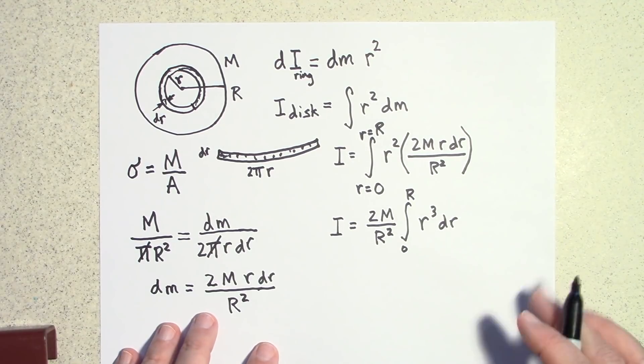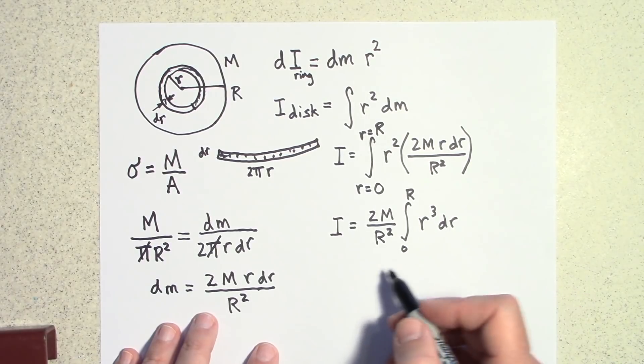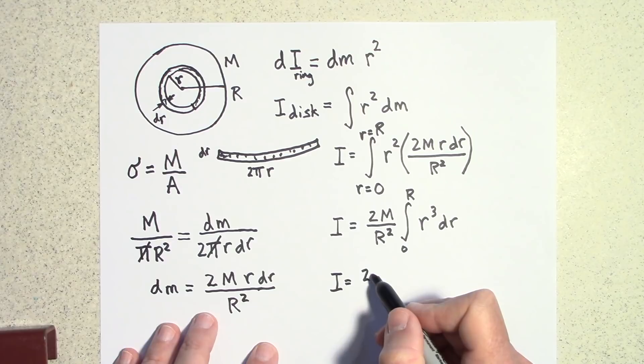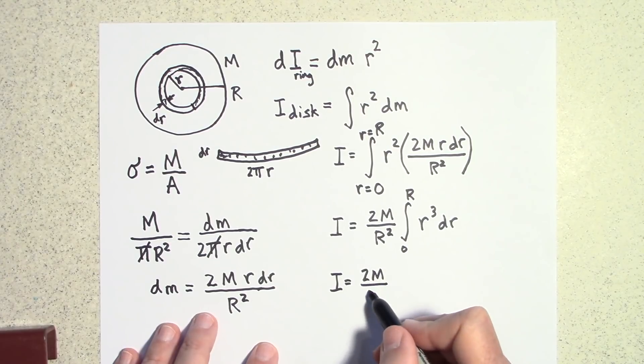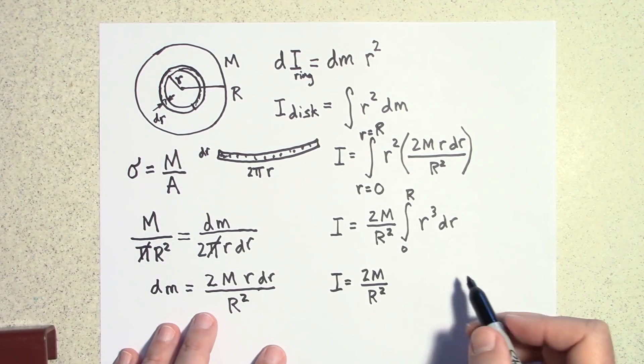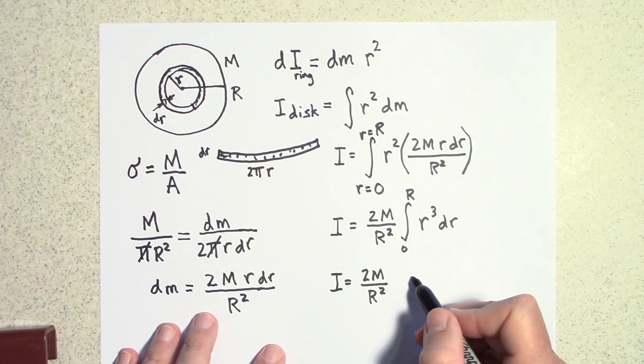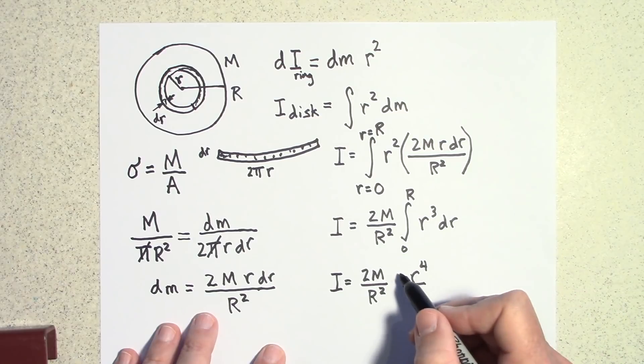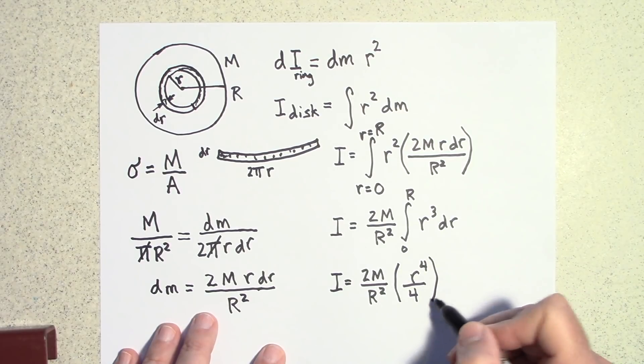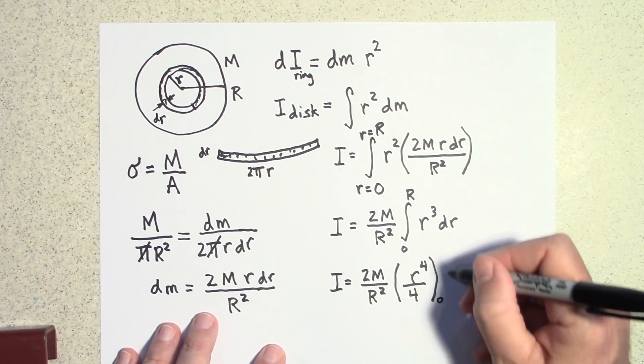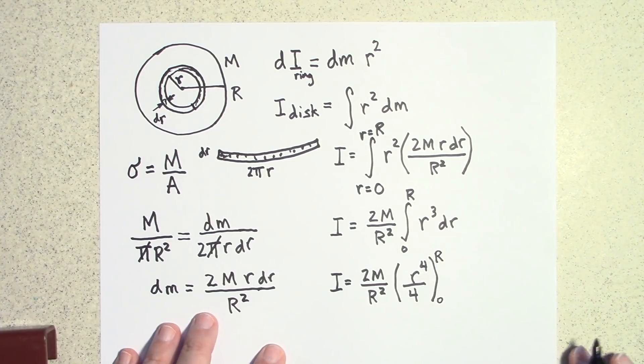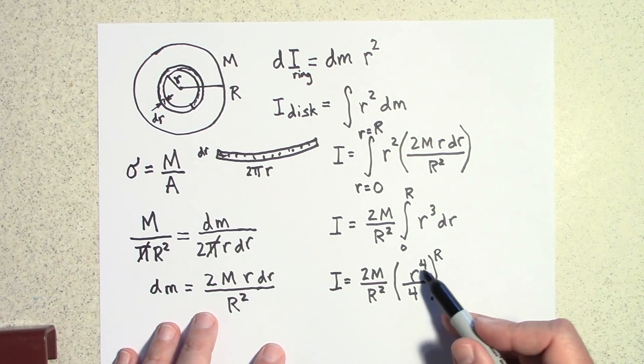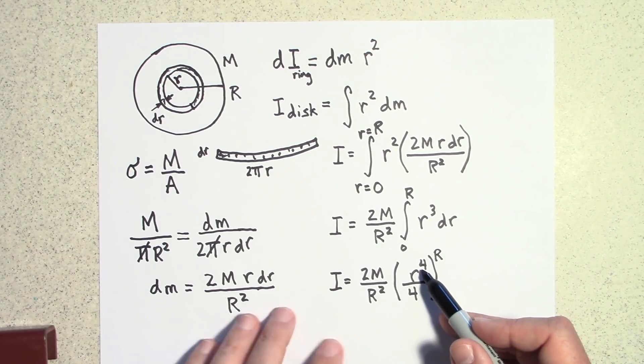Okay, so let's go ahead and solve this integral then. So this is I will equal 2m over r squared, capital R squared, and now to solve this I'm going to raise this to the fourth power and then divide by four and so that's how you take an integral. And so that would be from zero to that uppercase R. Okay, let's go ahead and put in the uppercase R first.